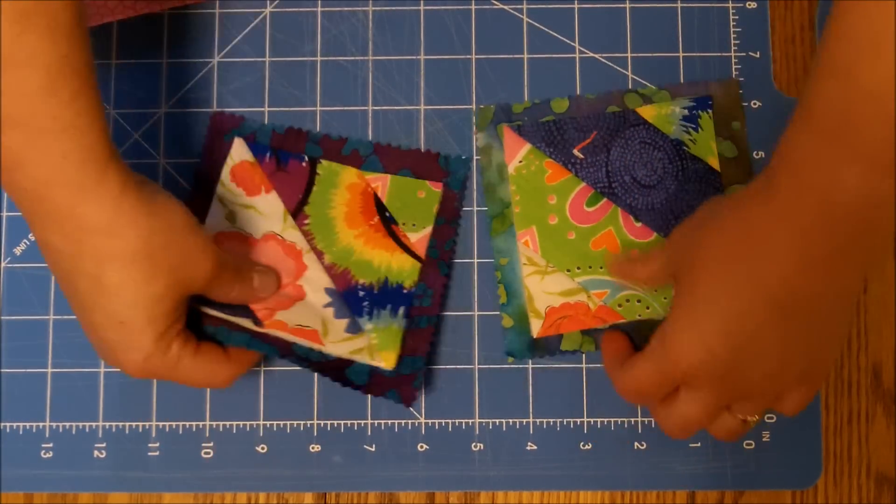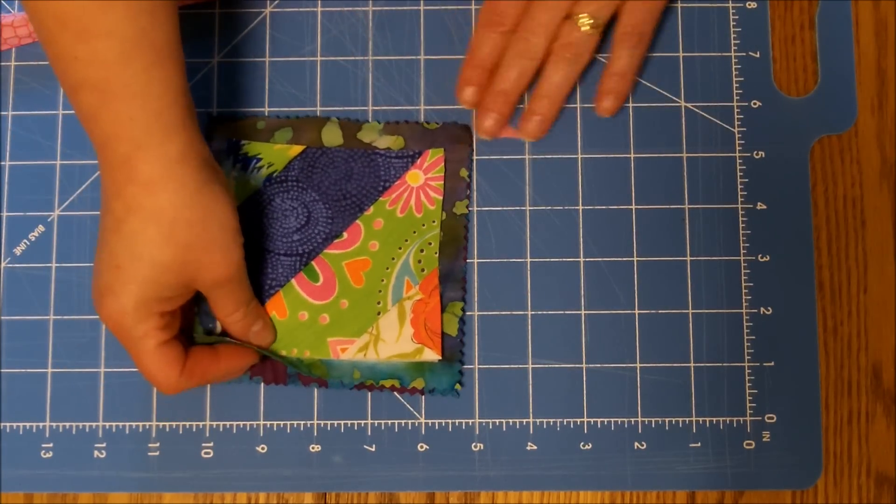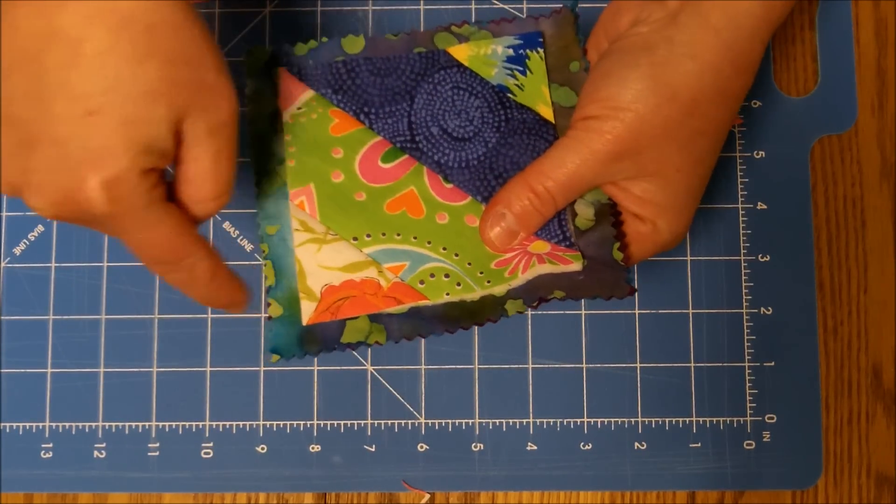This is my solution. I take two squares and I lay them on top of each other, back to back. I pin them together, and then I sew down this line here.